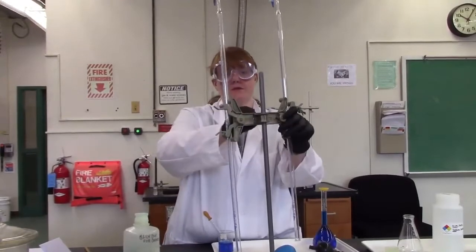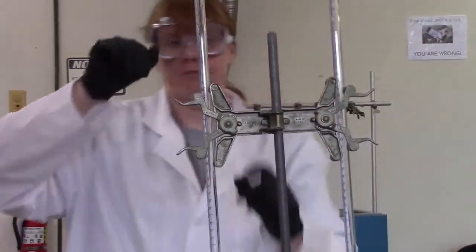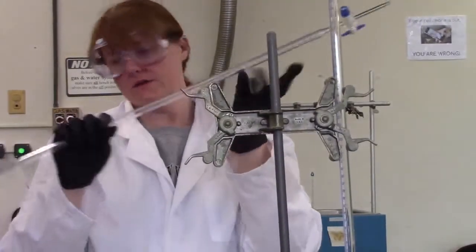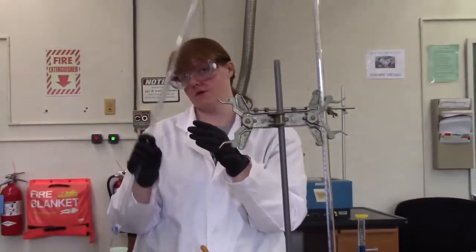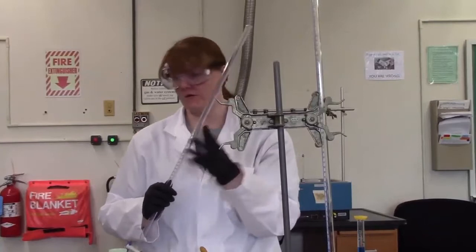This is called a burette clamp. They're specially designed to hold a burette completely vertical. You operate them by pinching the clamp here to let the burette go. Now burettes aren't super cheap so make sure you're gentle with this. Don't use it for sword fighting or whacking the table. I know it's tempting. Try to avoid it.